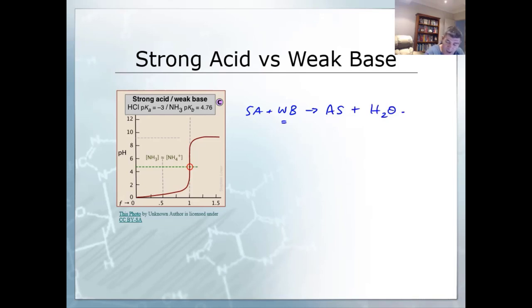As a result of this, we're going to have our base pushing its way through very slowly, reacting with the acid. But then once we get to that equivalence point again, you can see we get the vertical region of the graph.